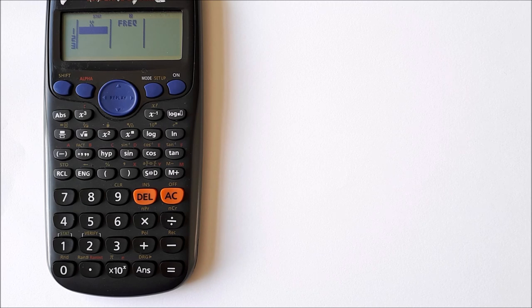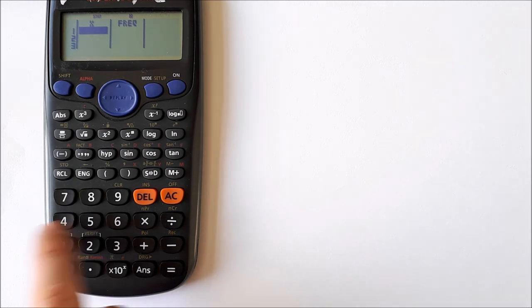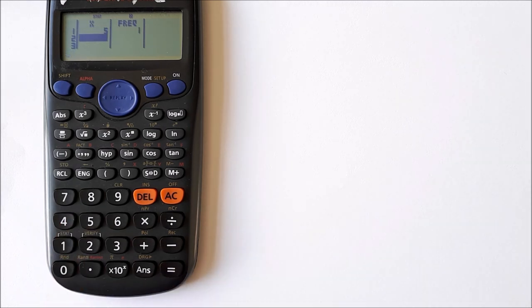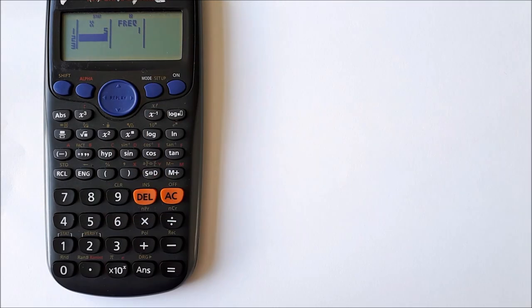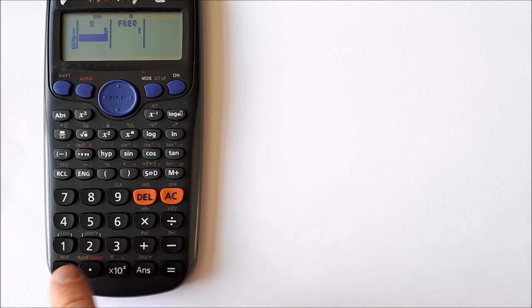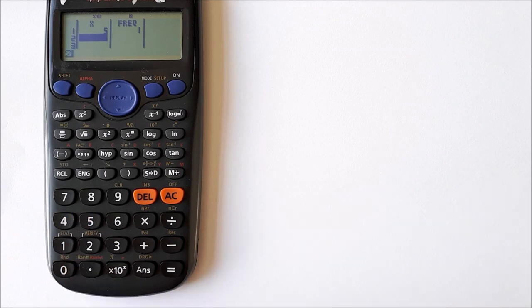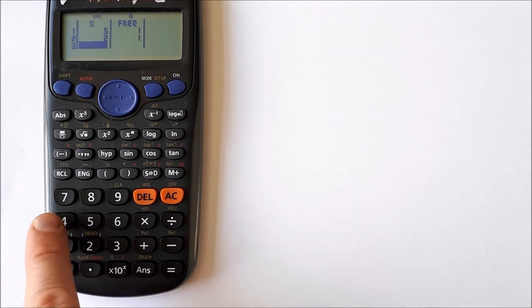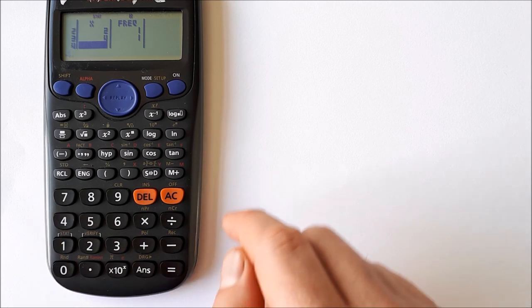Let's input some numbers. Say we have the number 5, press equals. It automatically comes up as a frequency of 1. We'll put in the frequency in a moment. Let's say we have the number 2, press equals, and the number 4, press equals. I'm going to keep it at these three numbers: 5, 2, and 4.